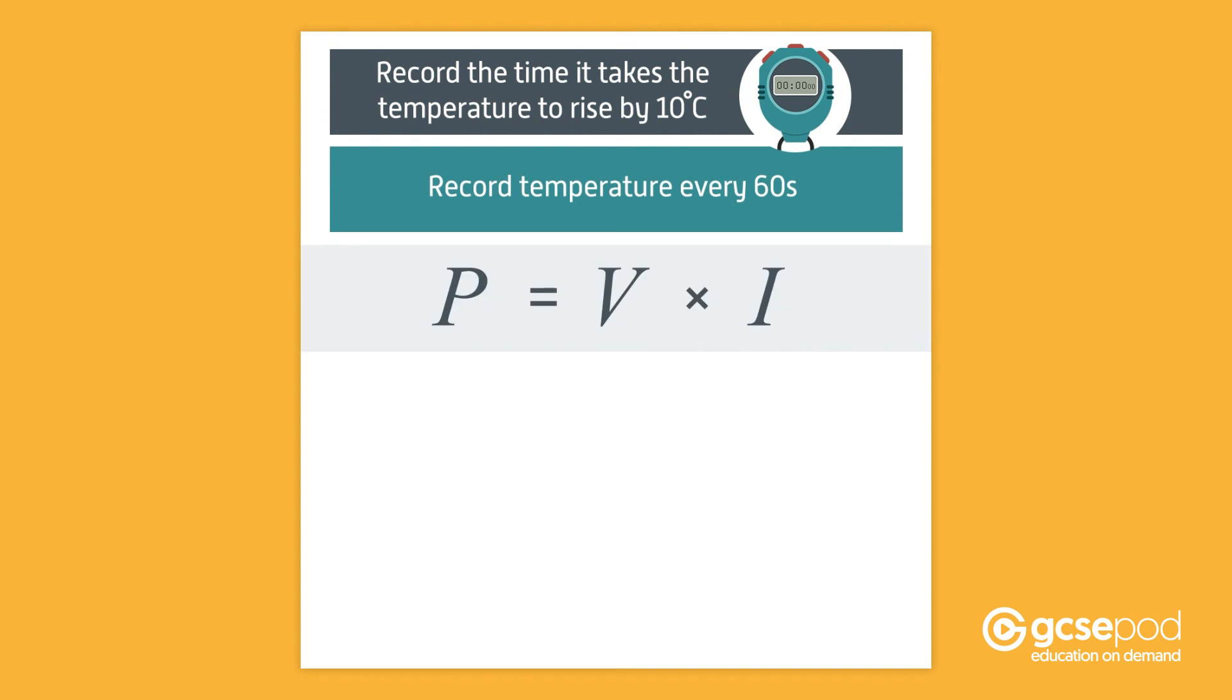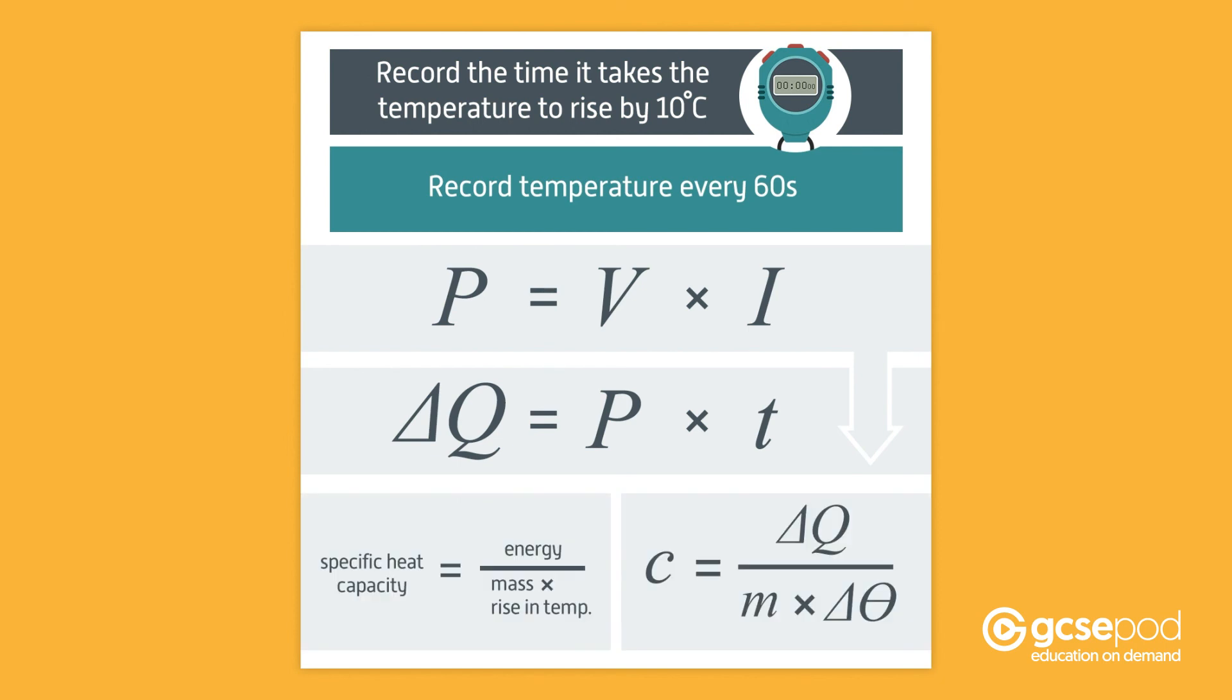You can then calculate the specific heat capacity of water using the same formulae as before. Once again, use P equals V multiplied by I to calculate power. Then substitute this value into the following equation. Energy in joules equals power multiplied by time in seconds. As with before, this allows you to calculate the energy. The energy can then be used in specific heat capacity equals energy divided by mass multiplied by rise in temperature. This allows you to successfully determine the specific heat capacity of the liquid.